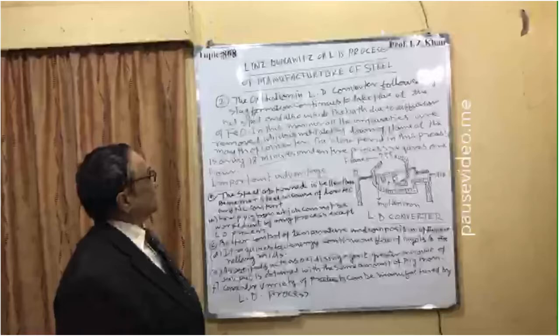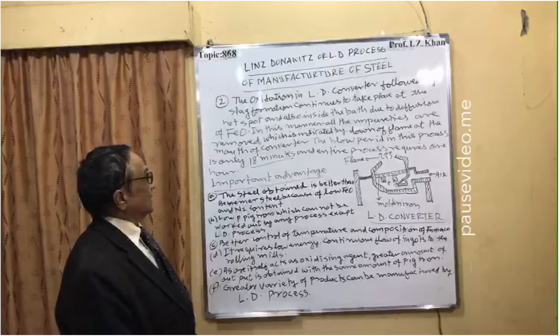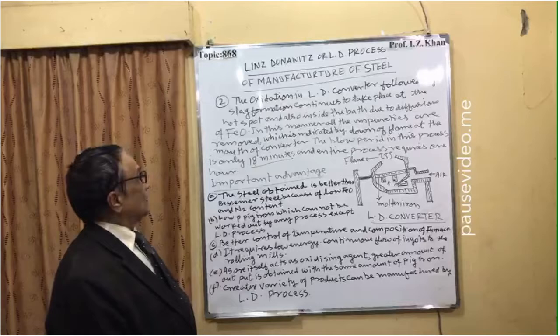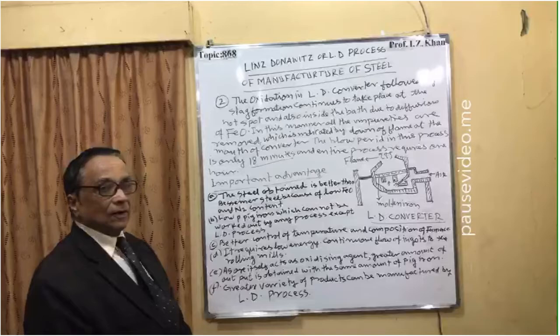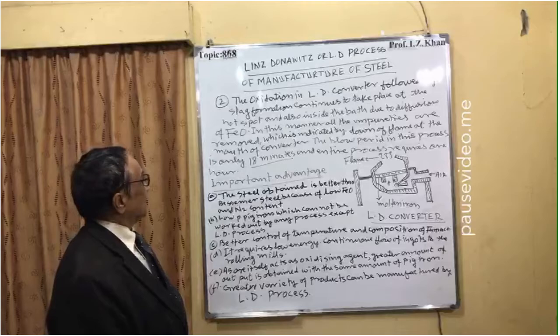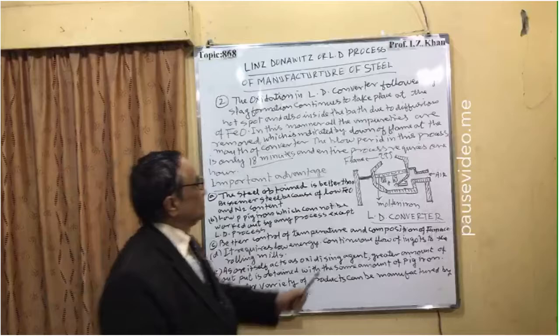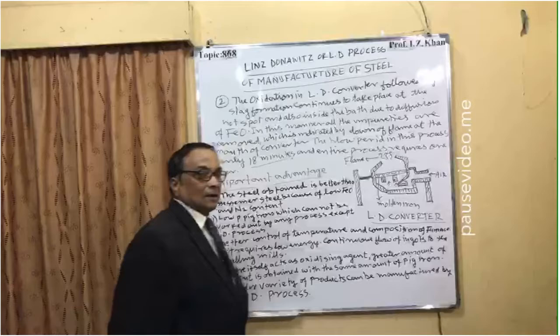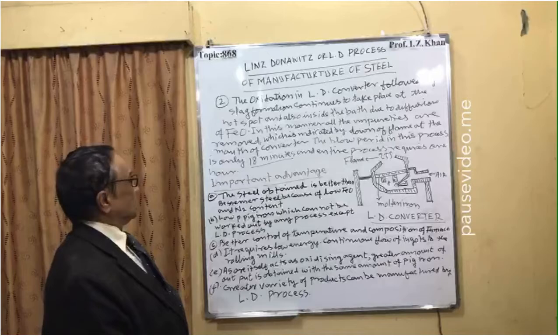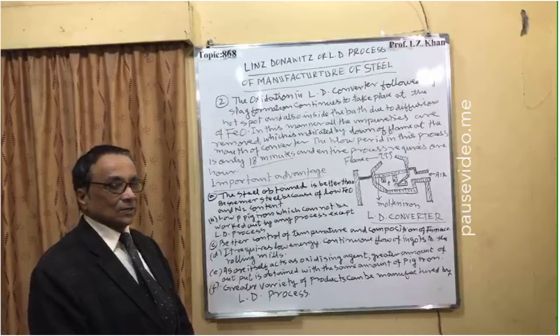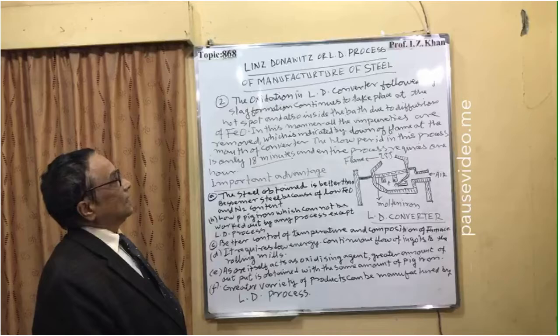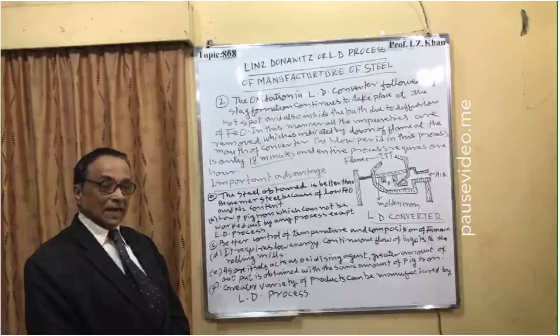The oxidation in the L.D. converter followed by slag formation continues to take place at the hot spot and also inside the bath due to diffusion of iron oxide (FeO). In this manner all the impurities are removed, which is indicated by a down flame at the mouth of the converter. The blow period in this process is only 18 minutes, and the total process takes 1 hour, which is why the L.D. process is very popular, efficient, and effective in energy and time consumption.